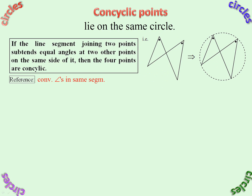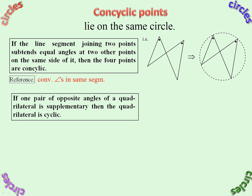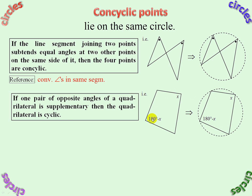If a pair of opposite angles of a quadrilateral is supplementary, then the quadrilateral is cyclic — adding up to 180 degrees means it must lie in a circle. The reason: Converse Opposite Angle Cyclic Quad.